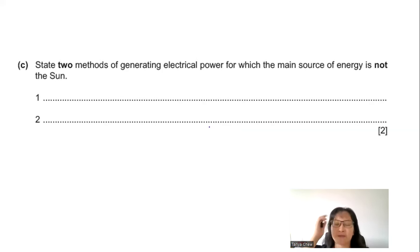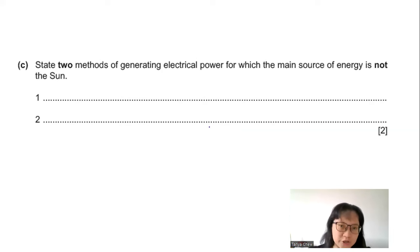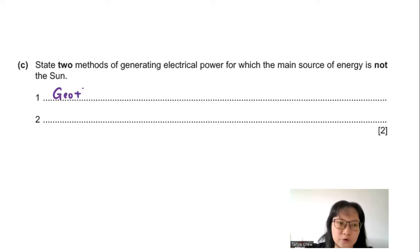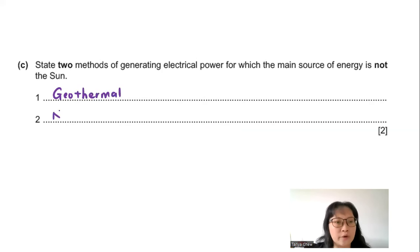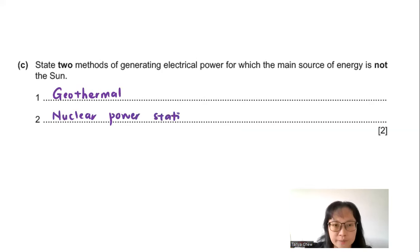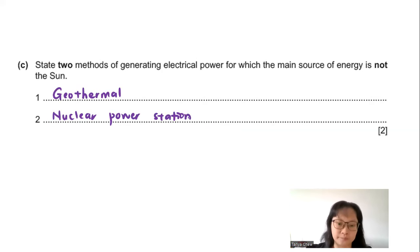Part C: State two methods of generating electrical power for which the main source of energy is not the Sun. The first is geothermal energy. The second is nuclear power stations or nuclear energy, as nuclear energy does not originate from the Sun.